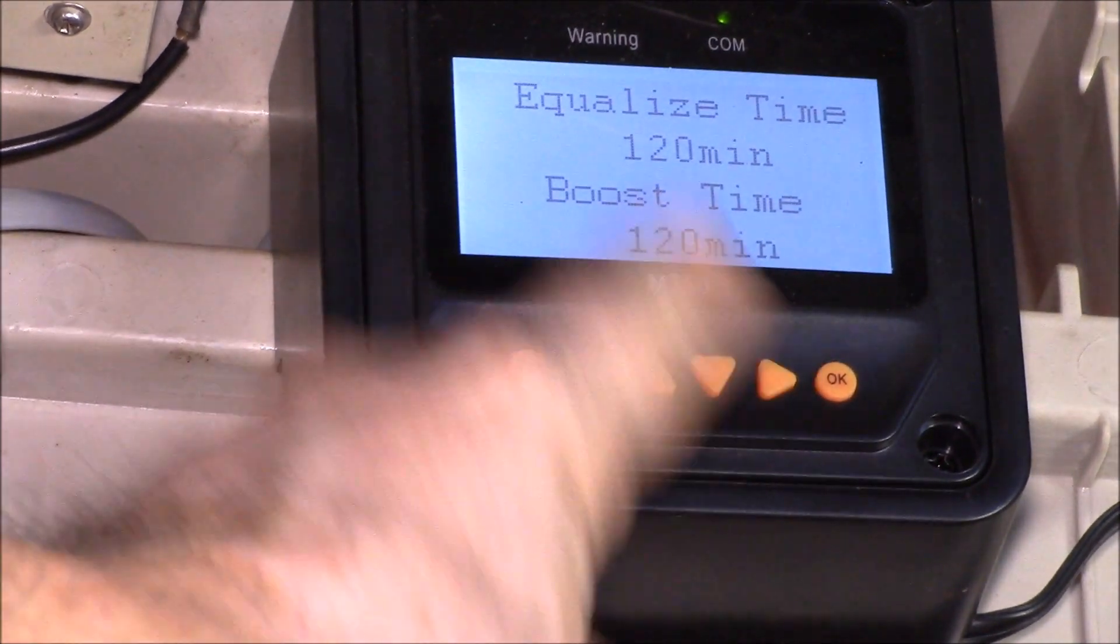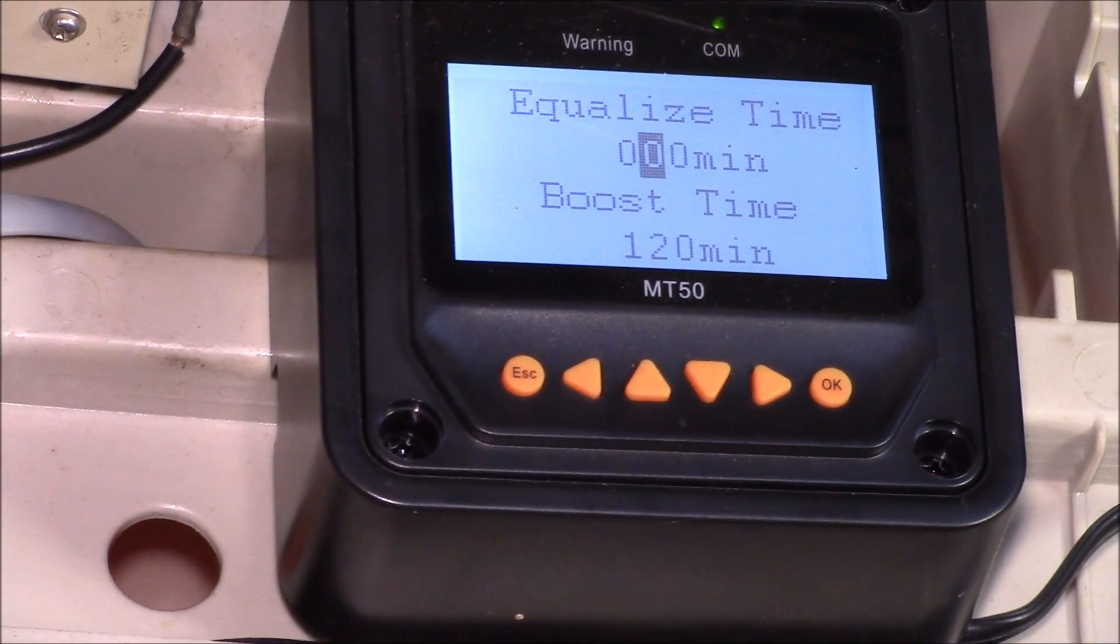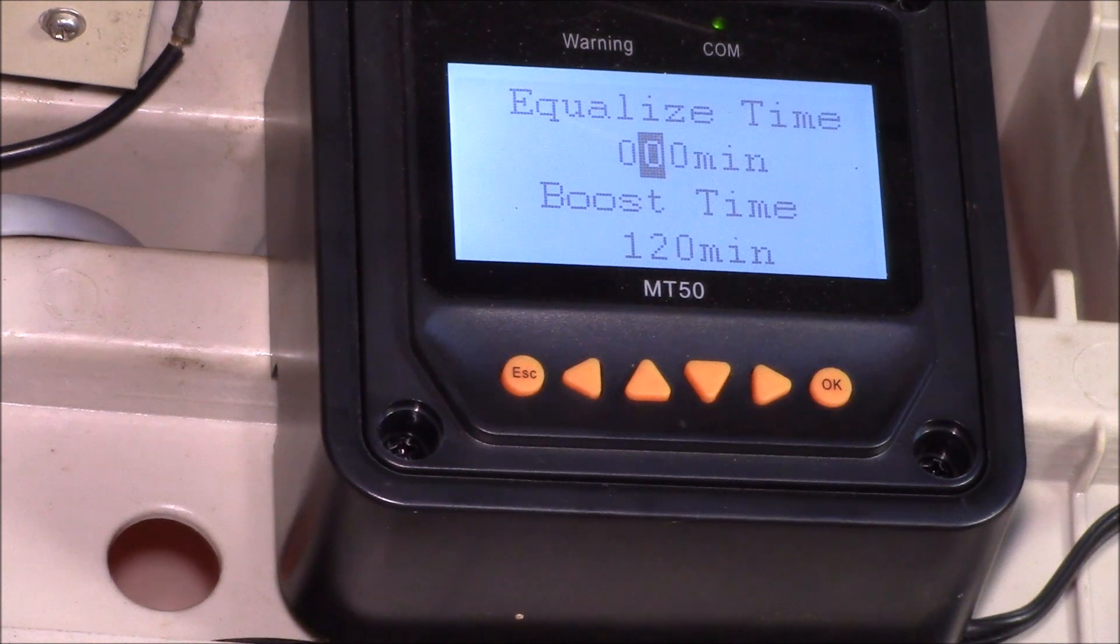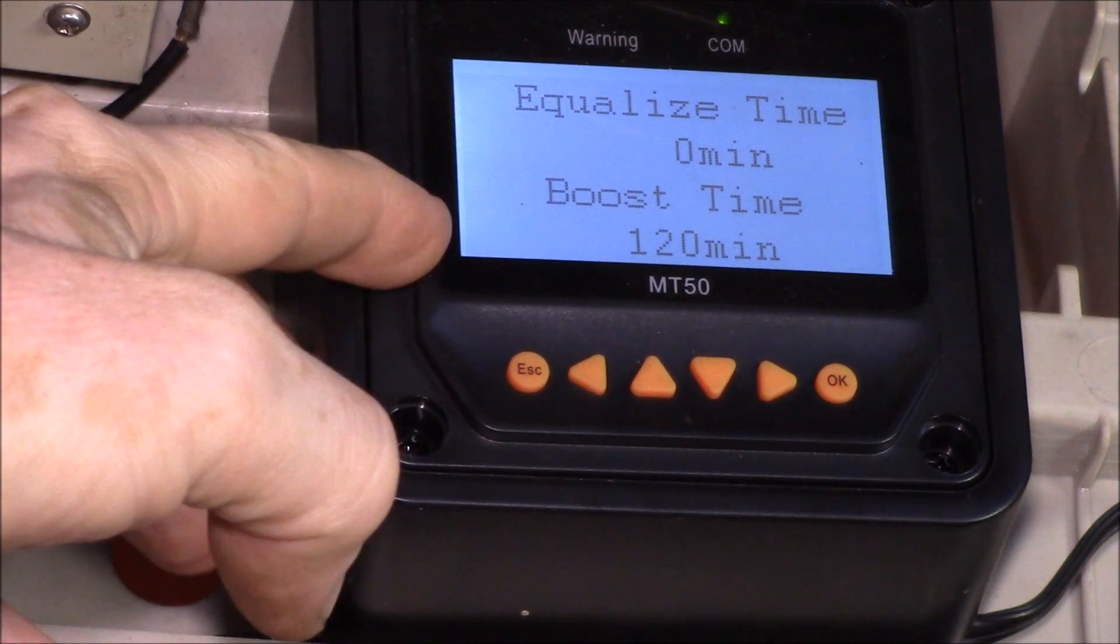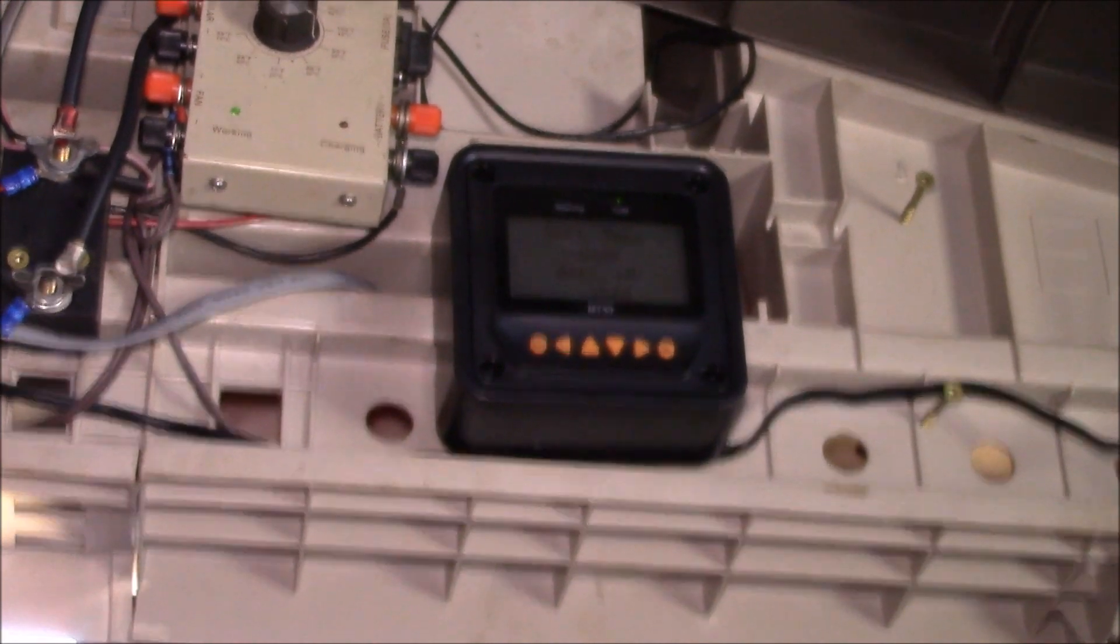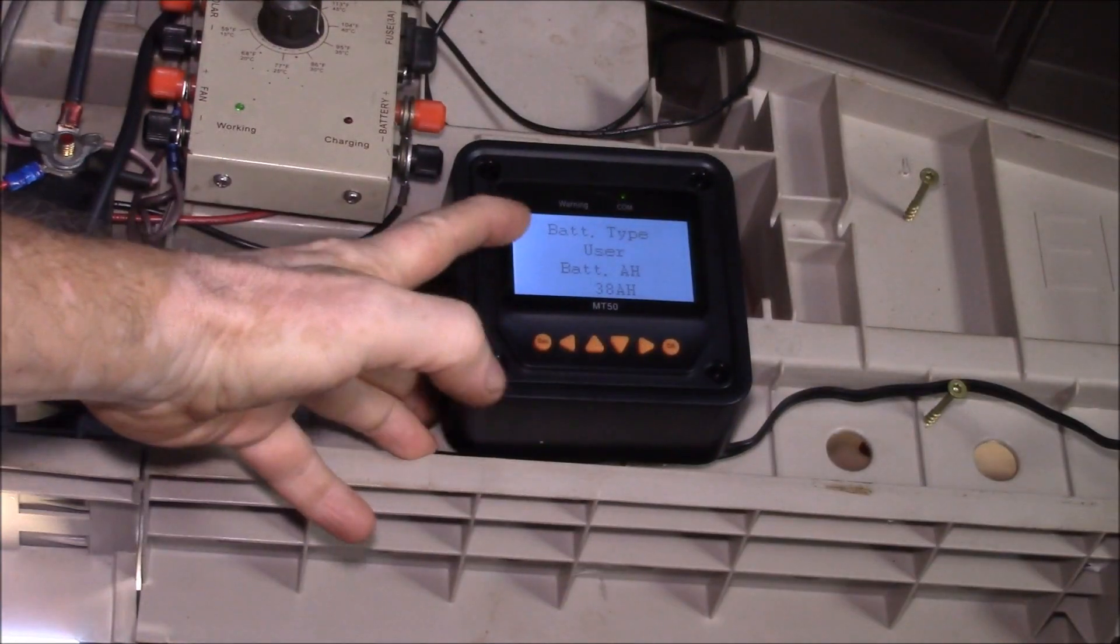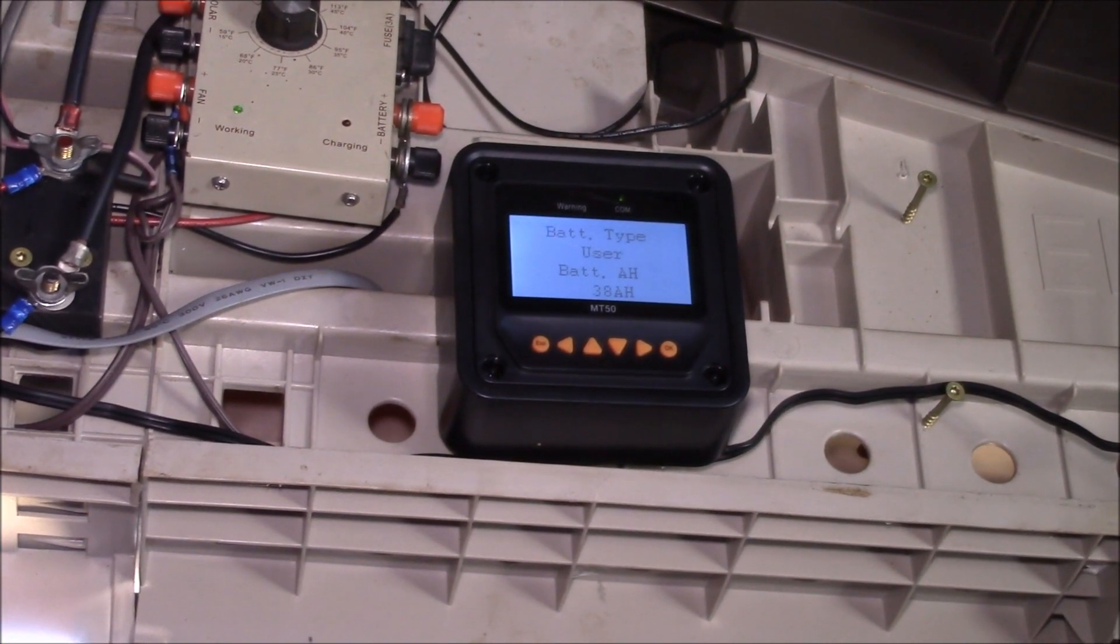Here is where I have to change the equalization time. I'll leave the boost time on 120 minutes, so it's two hours. It basically says charge at the higher voltage for two hours in the morning and then switch over to float charge. I'll save, so we've got zero minutes equalize, two hours boost, and now I have a custom user-defined battery type.